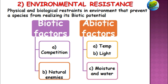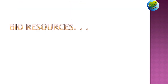Abiotic factors such as temperature, light, moisture, water, and the limited level of substratum and medium in a particular ecosystem also determine environmental resistance. Bio-resources in the ecosystem refer to what biological communities provide within the ecosystem.